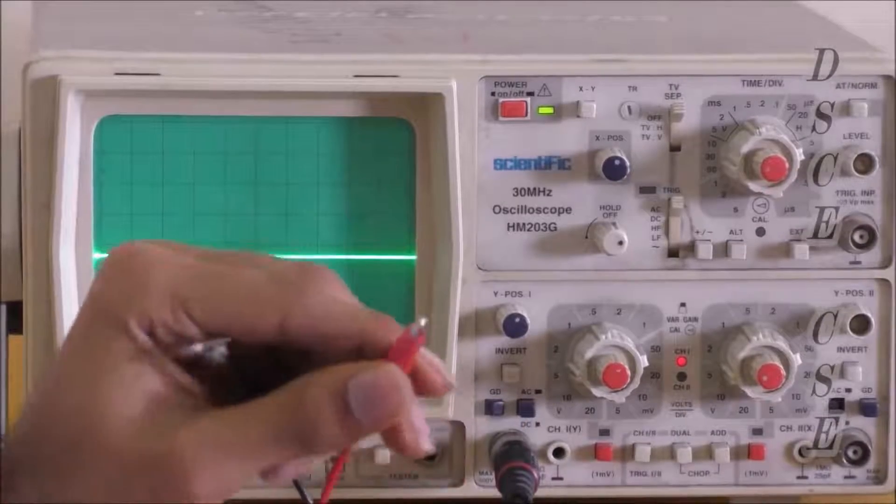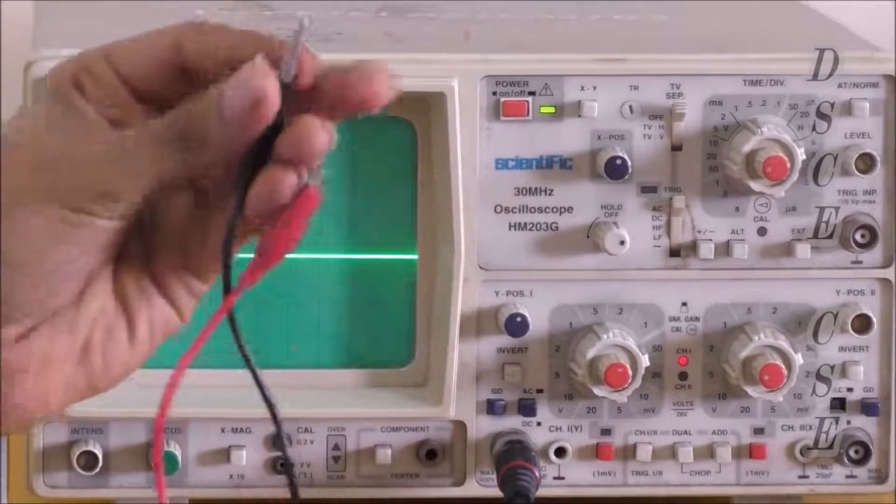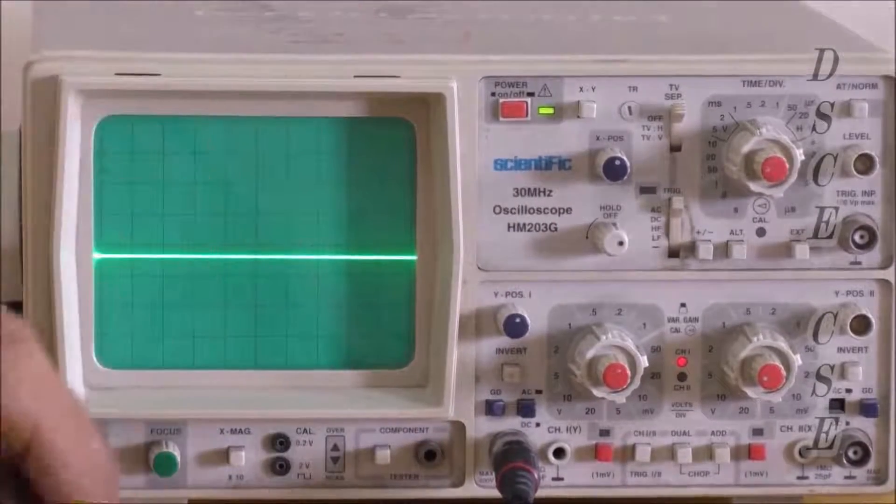This is the positive of the probe and this is the negative of the probe. These are connected to the circuit to get the output.